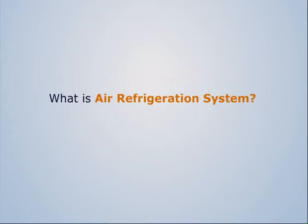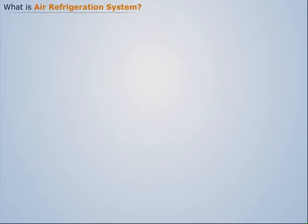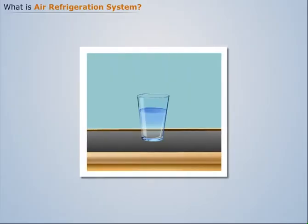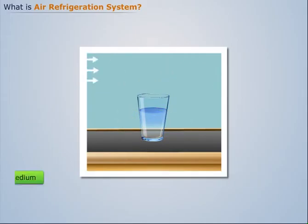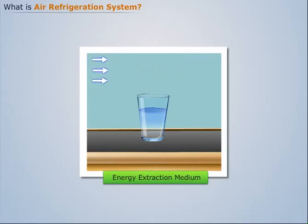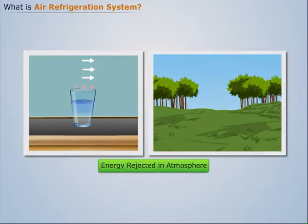What is an air refrigeration system? To understand this, consider a glass filled with water at room temperature. To cool this water below atmospheric temperature, we need to extract energy out of it. This energy extraction can only be done through some medium which will extract the energy out of water, carry it, and reject it into the atmosphere.